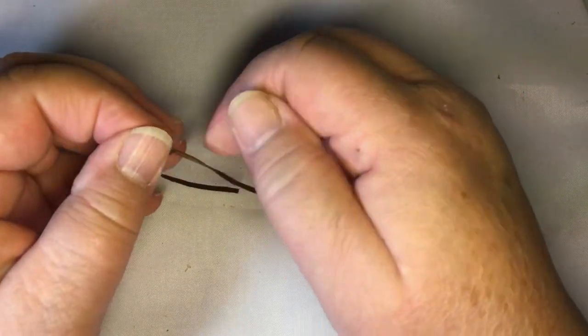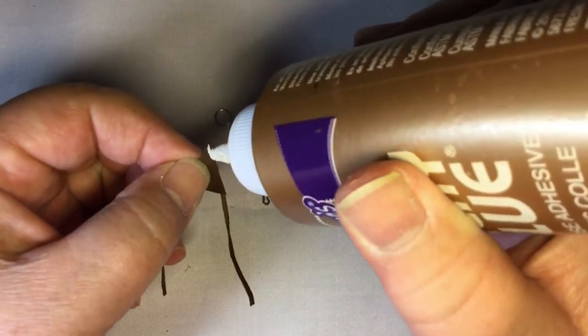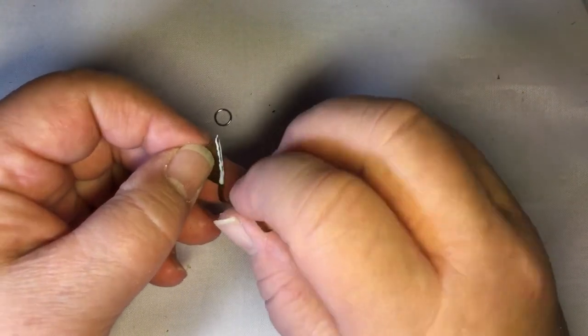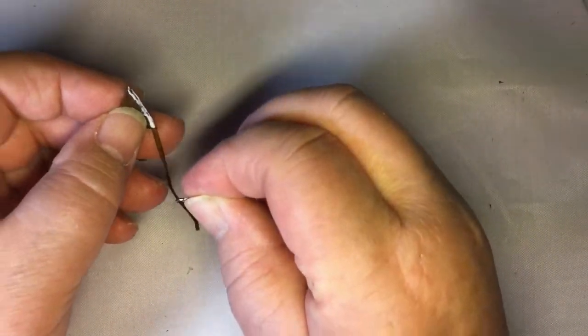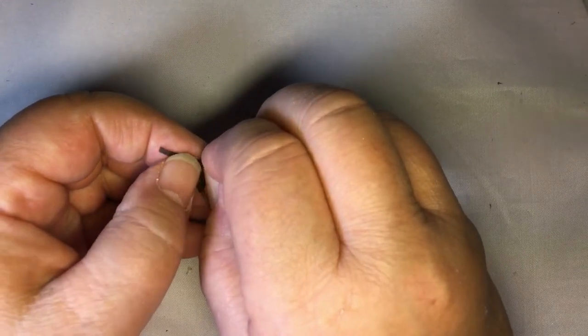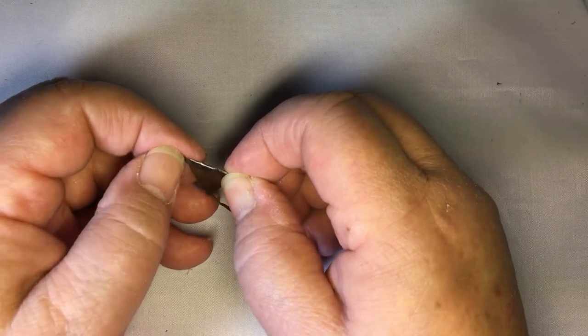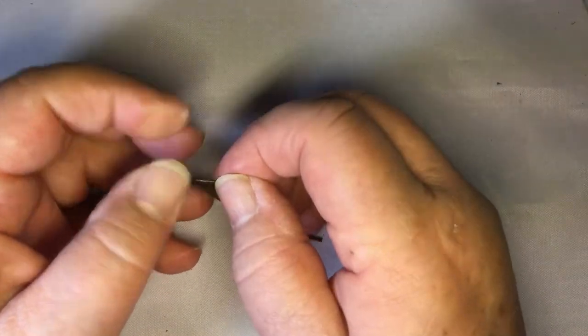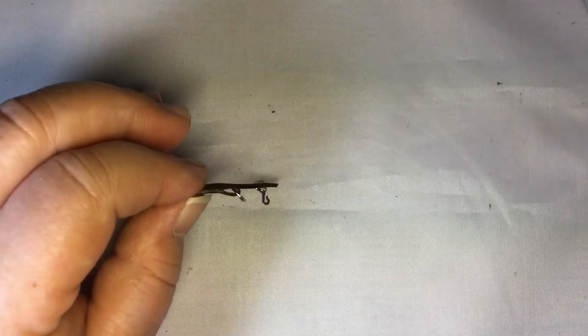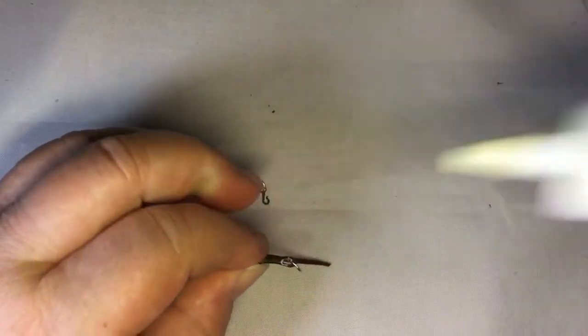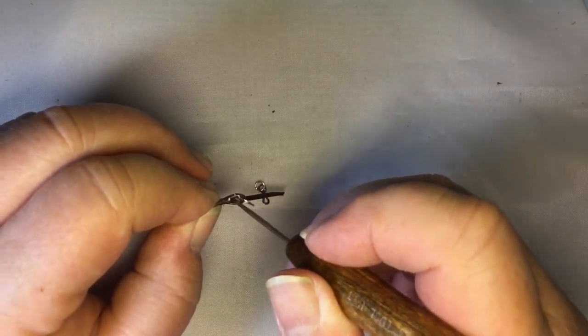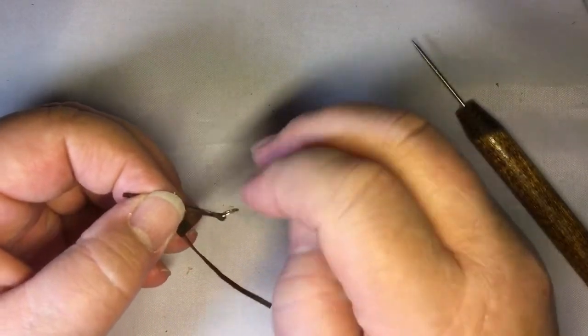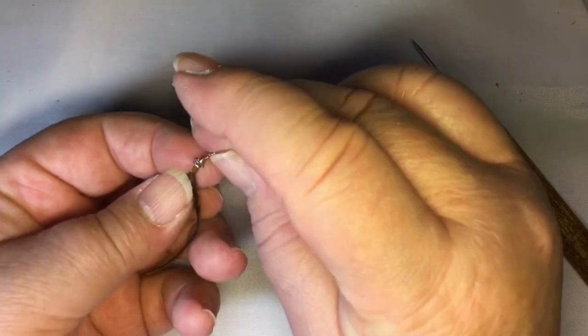So we're going to go ahead and put a jump ring in, then I'm going to fold it over. I'm going to close it a little bit. Needle on a stick. God, I love my needle on a stick. I'm going to go ahead and put my hook here.